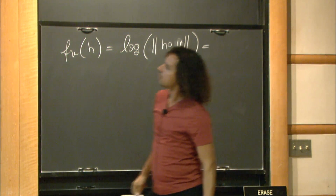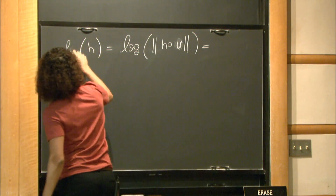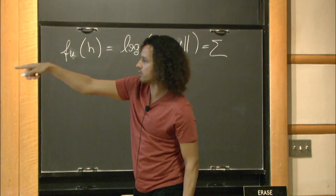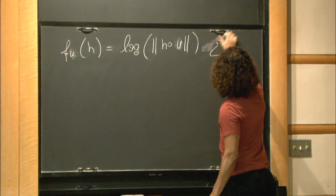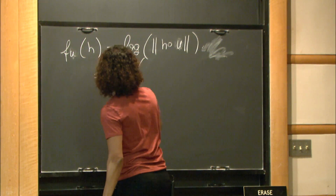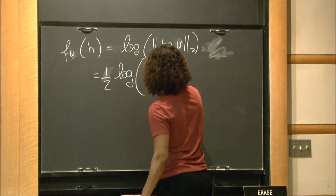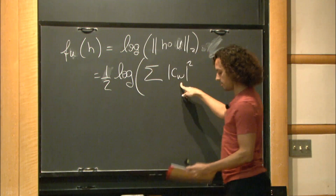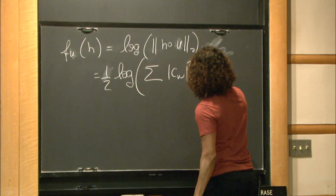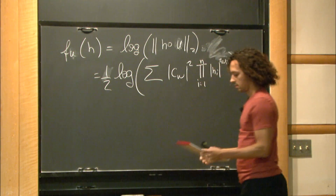Suppose I want to take the derivative in direction y = (y_1, ..., y_n). My infinitesimal action is e^{ty} = (e^{ty_1}, ..., e^{ty_n}). Once I apply this group action, the u_w coefficient gets multiplied by the product of h_i^{w_i}. So I'm differentiating the log of the sum over w of |c_w|^2 times e^{2t y·w}.